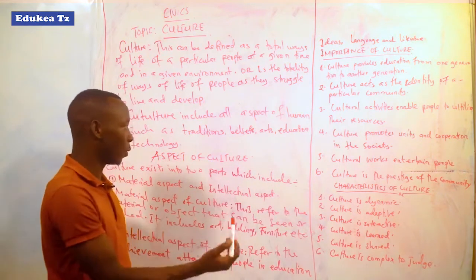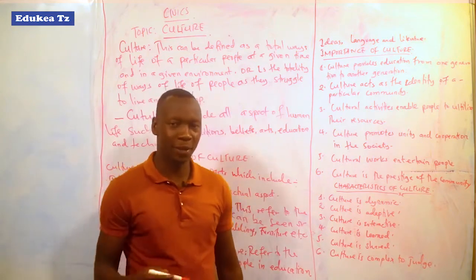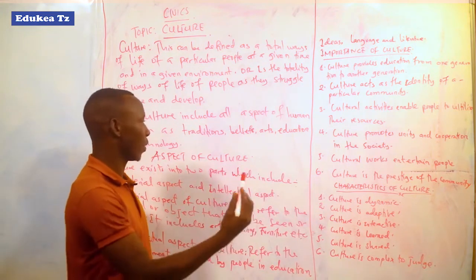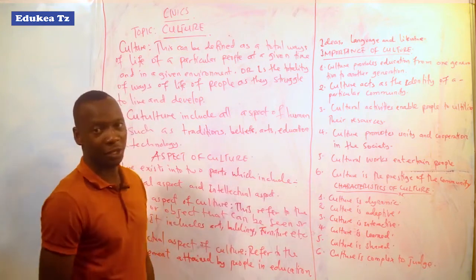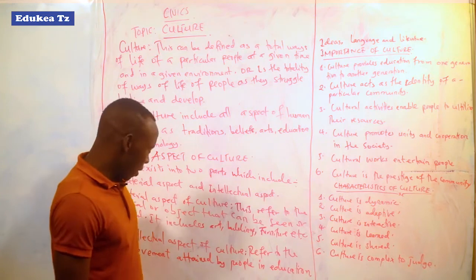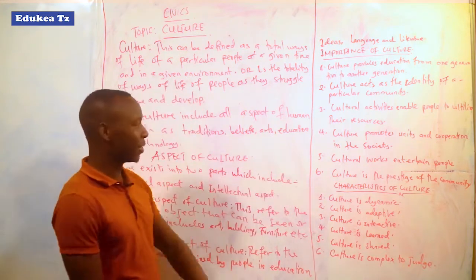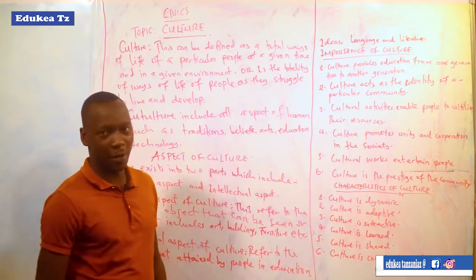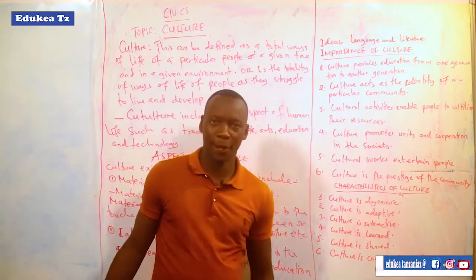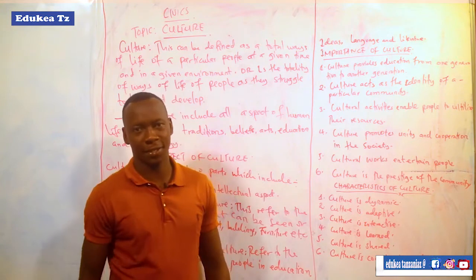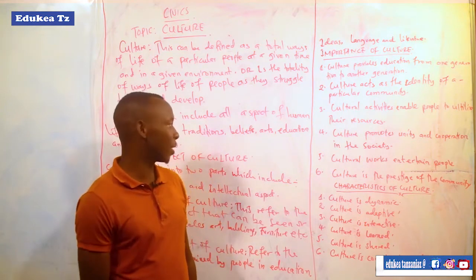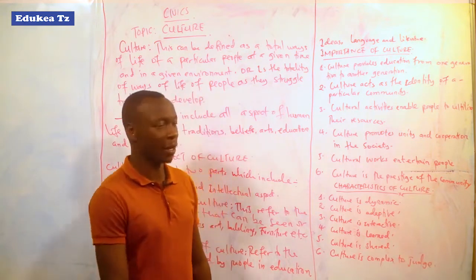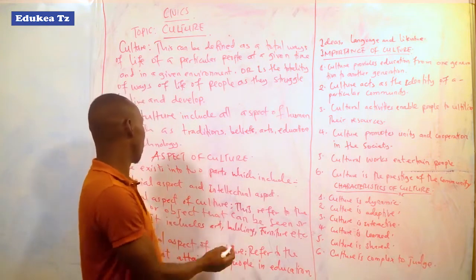Beliefs show how people live in a certain culture. For example, in beliefs you can find that people believe according to their fathers, or people believe in Christianity, or people believe in different religions. This also is another thing that identifies a certain culture. For example, people at Mtwara have arts of dancing and music; others are involved in fishing. They have different talents and arts in their daily lives.